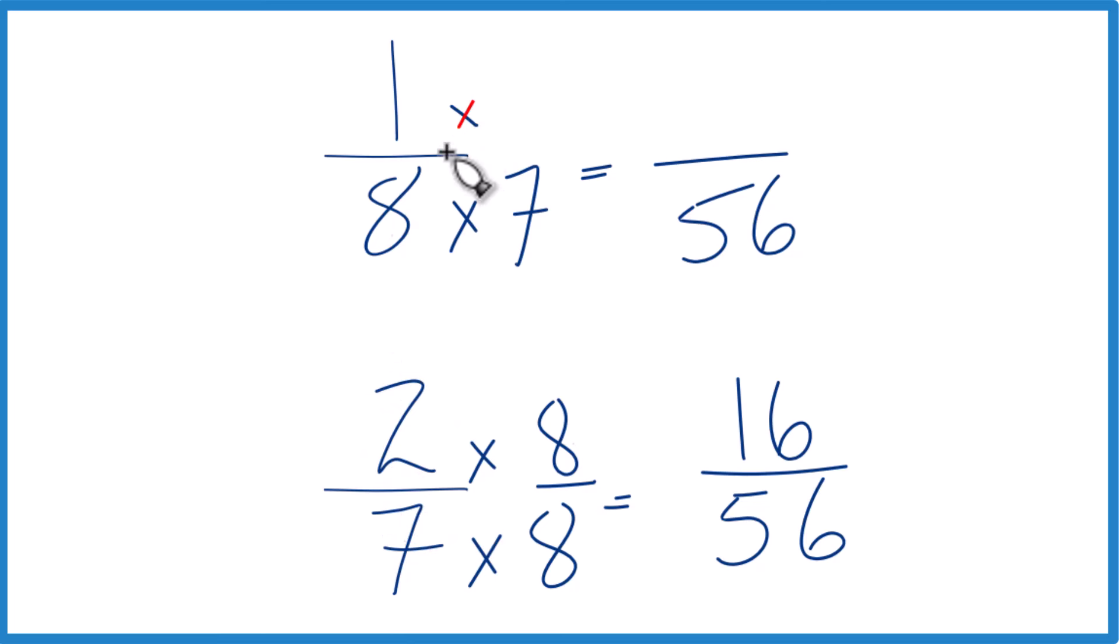Up here, we're going to multiply the numerator by the 7. 1 times 7, that's 7. So now we have the same denominators. We can just compare the numerators.